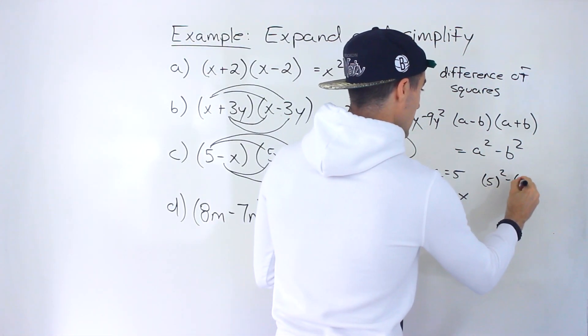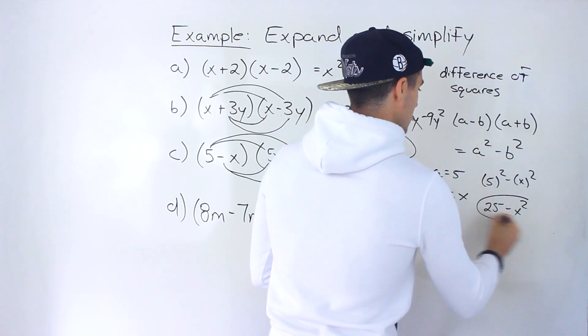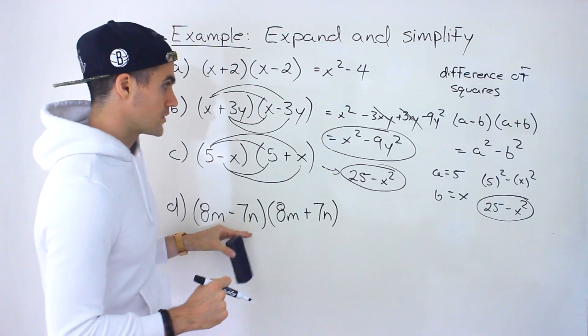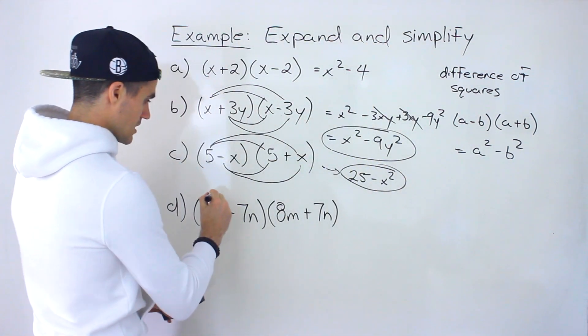you'd end up with 5 squared minus x squared, which gives you 25 minus x squared. Same thing that we got. And then finally, part d over here would be same process.